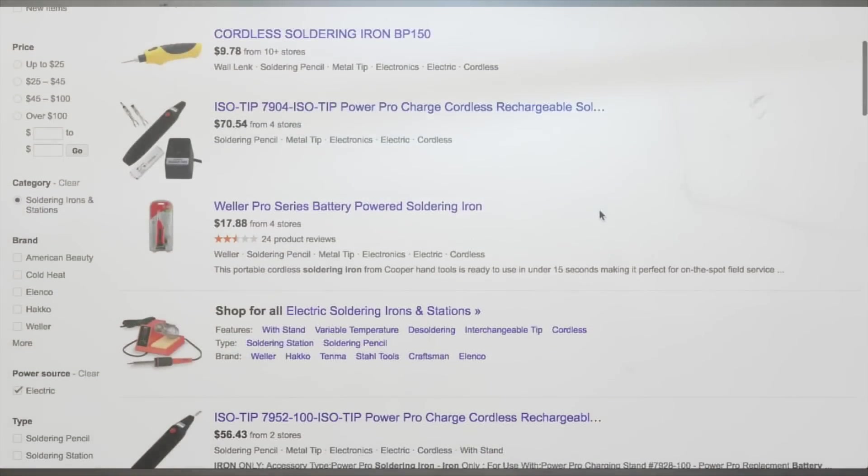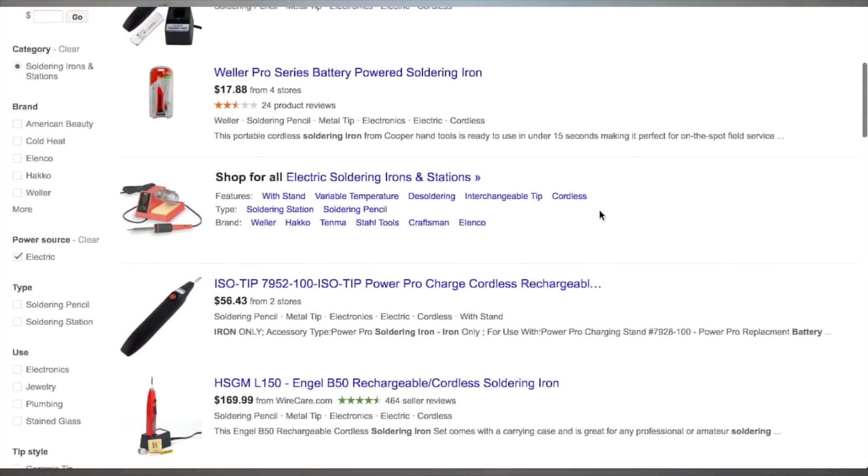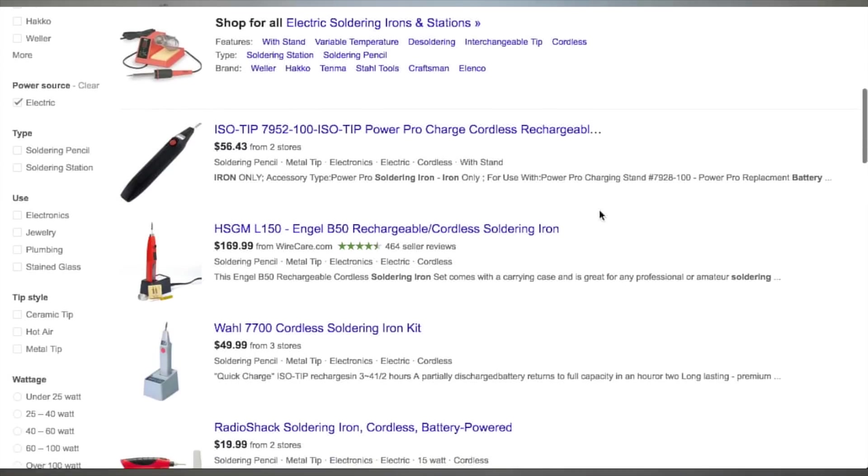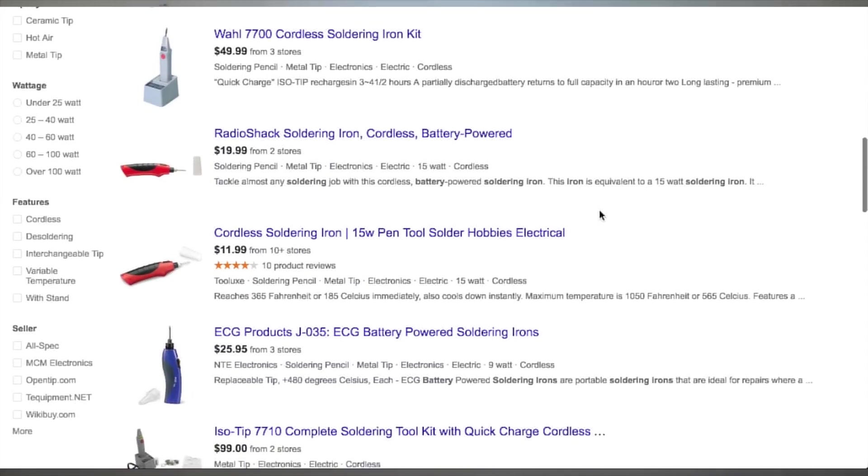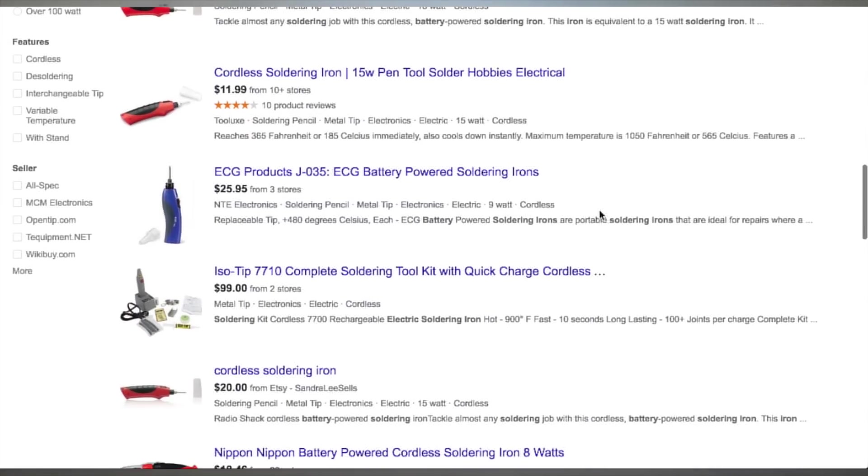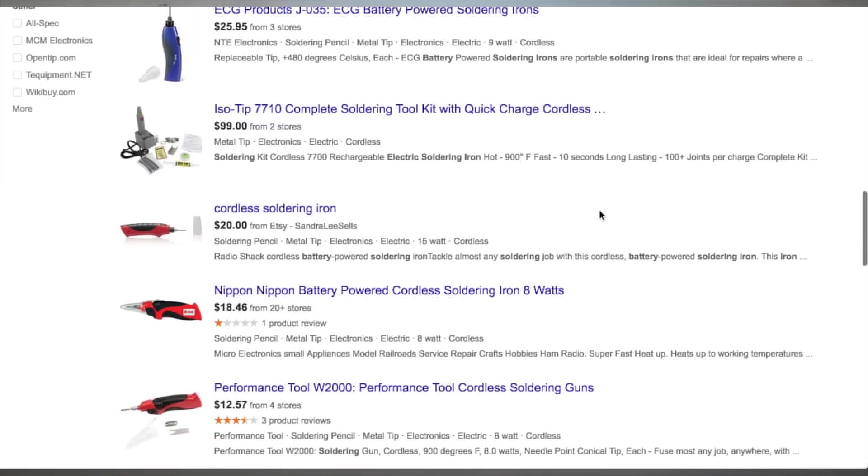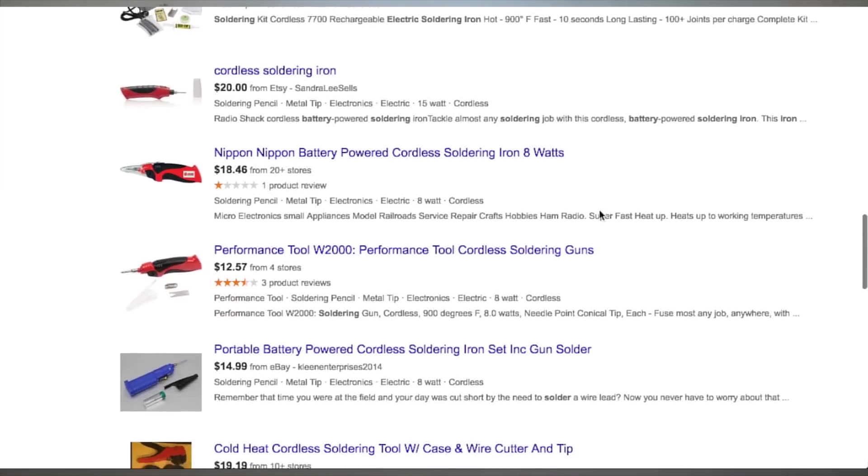The second option you have are these cheap battery-powered soldering irons. Now I know these come in a range of prices, but I've used quite a few of them and I've not really been happy with any. They generally don't deliver much heat or have much power and you can't solder anything with a large pad underneath it or anything that has a big connection.